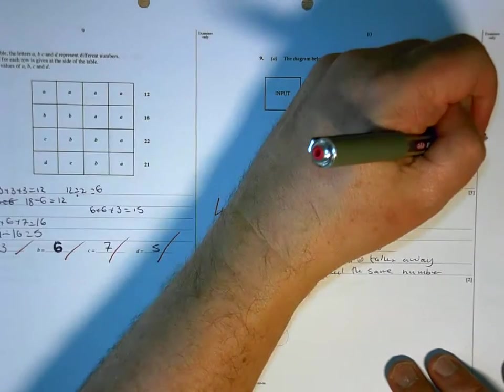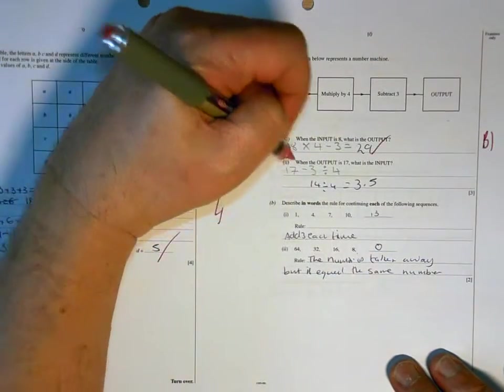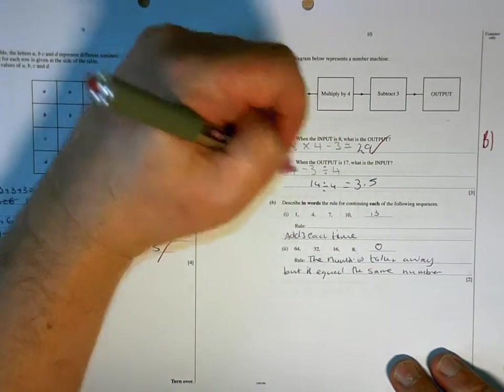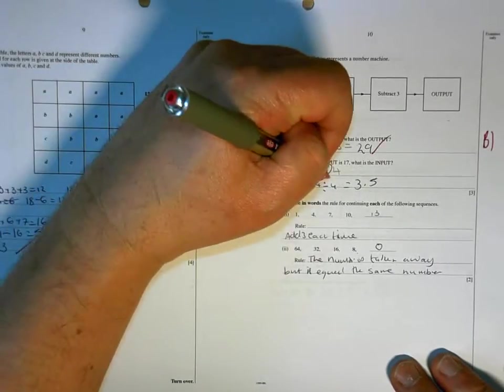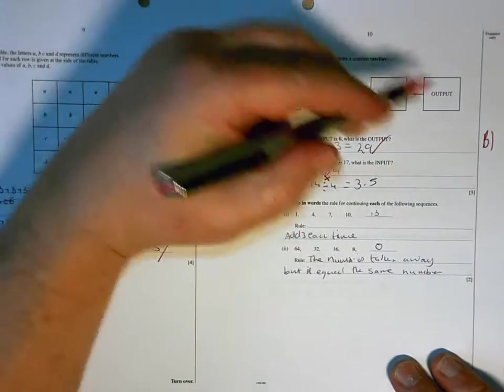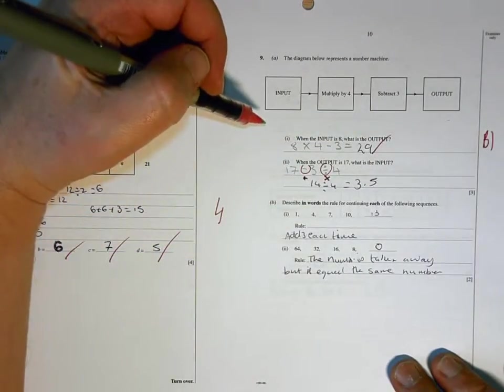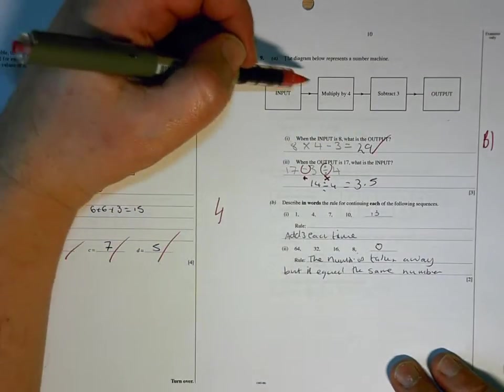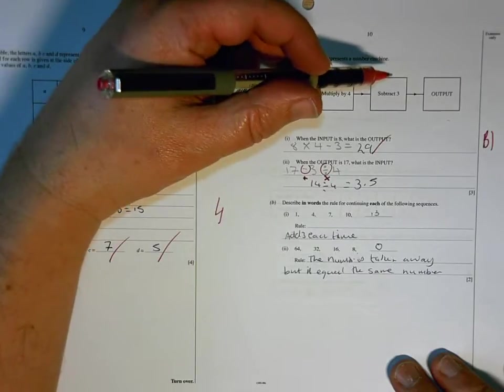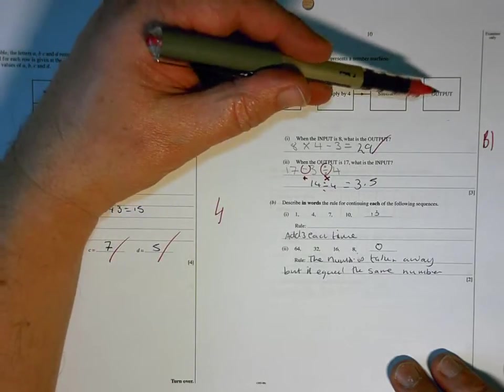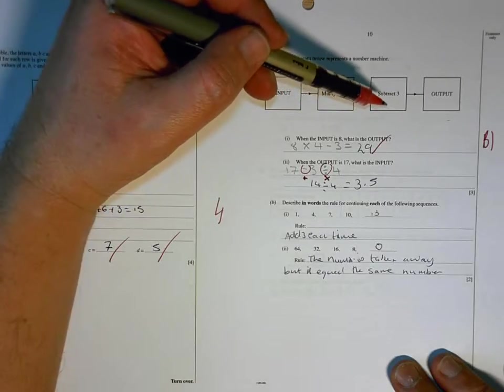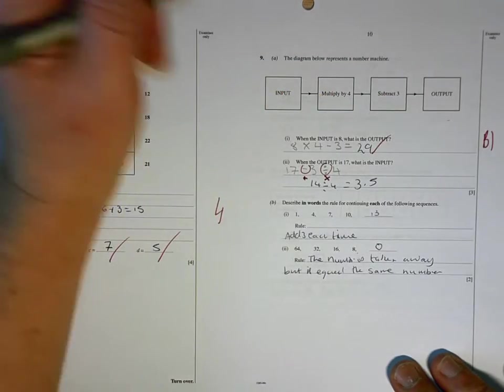29 is correct. This is wrong because you have to do the opposites. So it should be add 3 and then times by 4 because you're going in the opposite direction. So if you go in that way, you're times in by 3 and taking away. Sorry, times in by 4 and taking away 3. So to go the opposite way, first of all, you have to add 3 and then divide by 4.